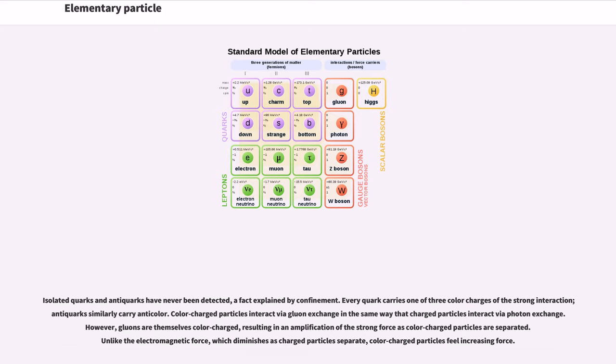Isolated quarks and antiquarks have never been detected, a fact explained by confinement. Every quark carries one of three color charges of the strong interaction; antiquarks similarly carry anticolor. Color charged particles interact by gluon exchange in the same way that charged particles interact by photon exchange. However, gluons are themselves color charged, resulting in an amplification of the strong force as color charged particles are separated.